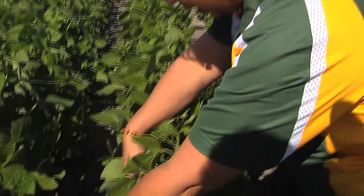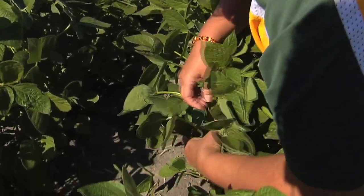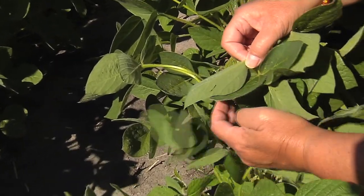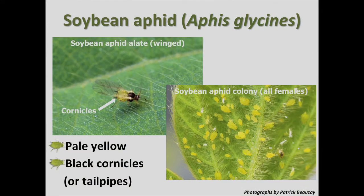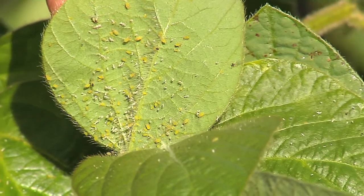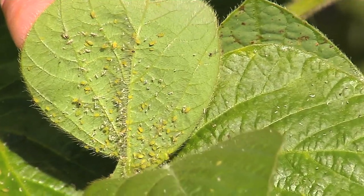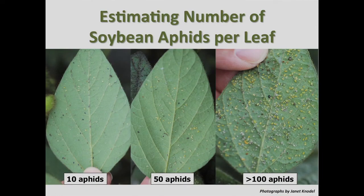You start by looking at the bottom of the plant for the aphids, and you need to be able to identify them. They're a small yellow aphid with black cornicles or tail pipes, about 1/16th of an inch long. They may be winged or wingless. Because they're so small, you can estimate the number of aphids once you have an idea of how many aphids look like for 10 aphids, 50 aphids, and 100 aphids per leaf, and then you can estimate them.